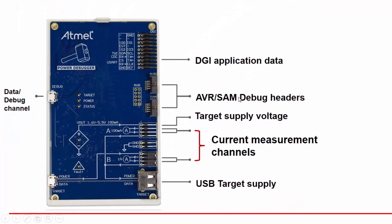Here we have the AVR and SAM debug headers. We have a target supply voltage so you can power your application. There are two current measurement channels: channel A is up to 100 milliamps, and channel B is a high current channel of up to one amp. You can also power a USB target.